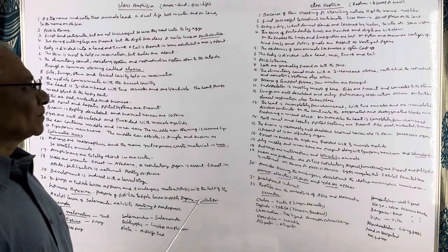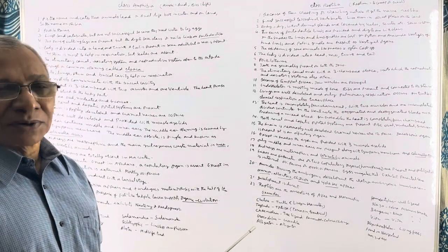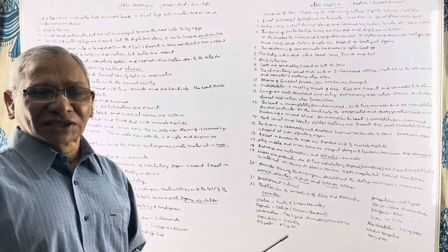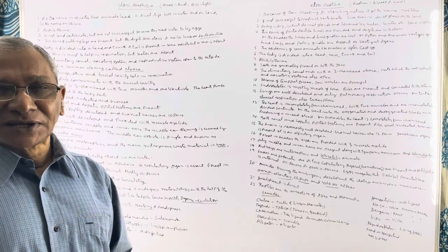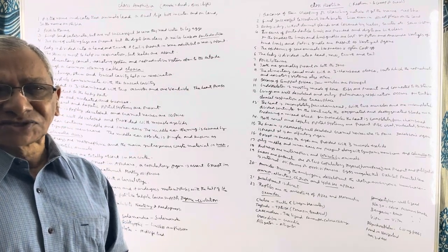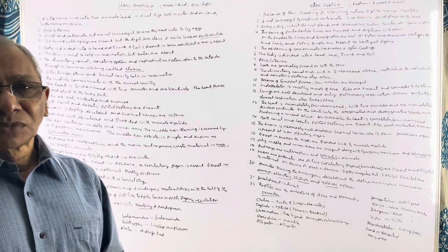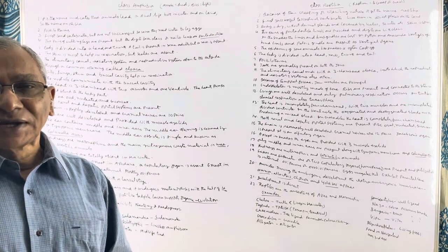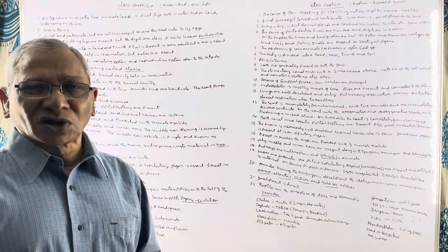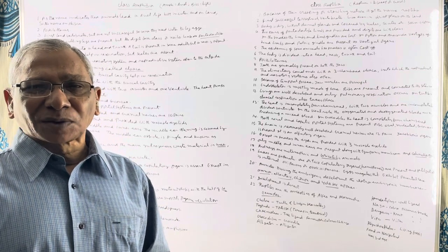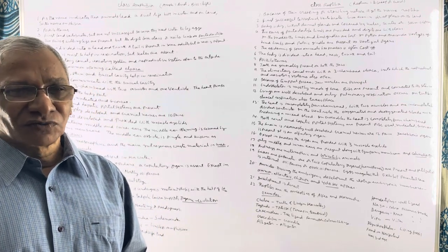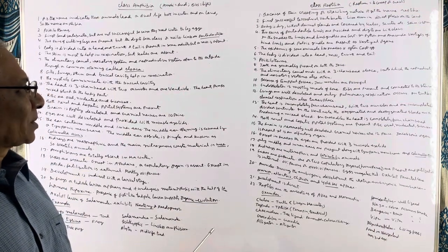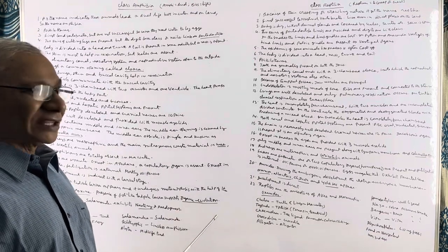Coming to class Reptilia. 'Reptum' means to creep or to crawl. As these animals creep or crawl on land, the class got the name Reptilia. The reptiles are mostly terrestrial — they have become completely terrestrial and their body is modified for terrestrial life. They have two pairs of pentadactyl limbs and the digits are provided with claws for terrestrial life.